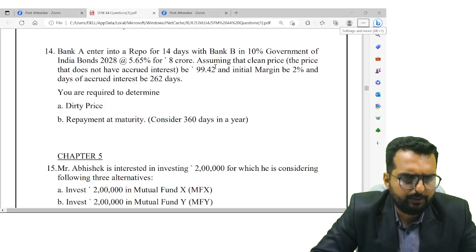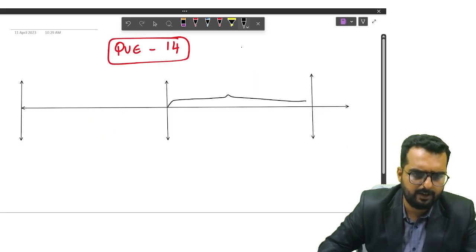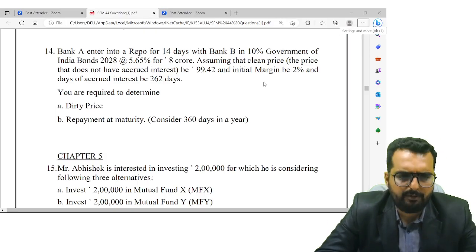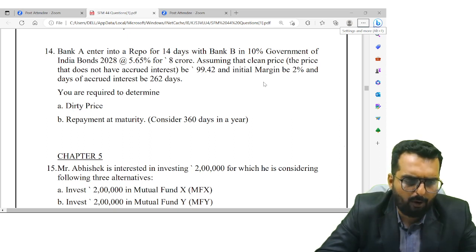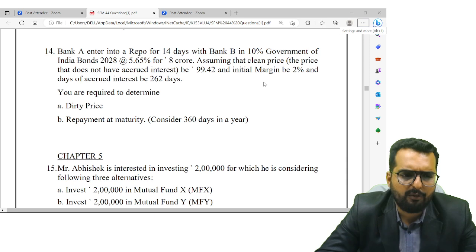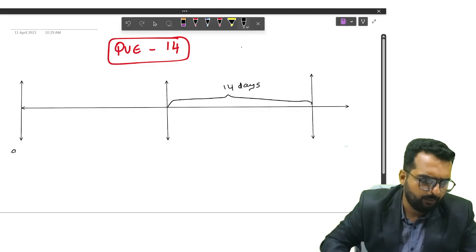Let's start doing it now. They have told 14 days is the repo duration, so this duration from here to here is 14 days. I will explain the whole thing to you. Clean price is how much? 99.42. So the price that we have today is what we call it as clean price.